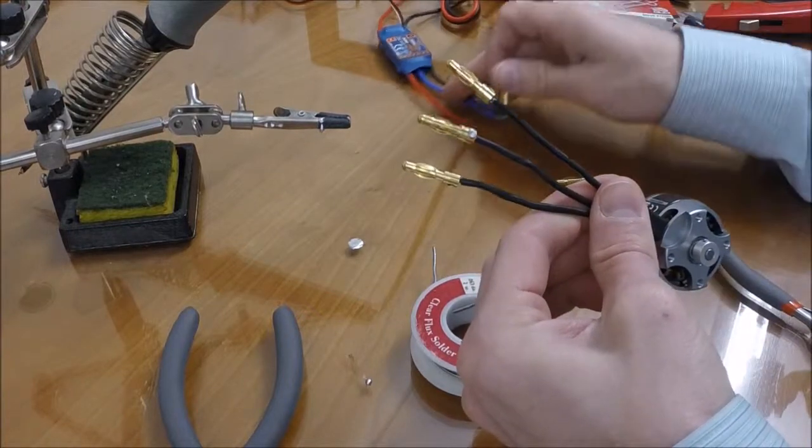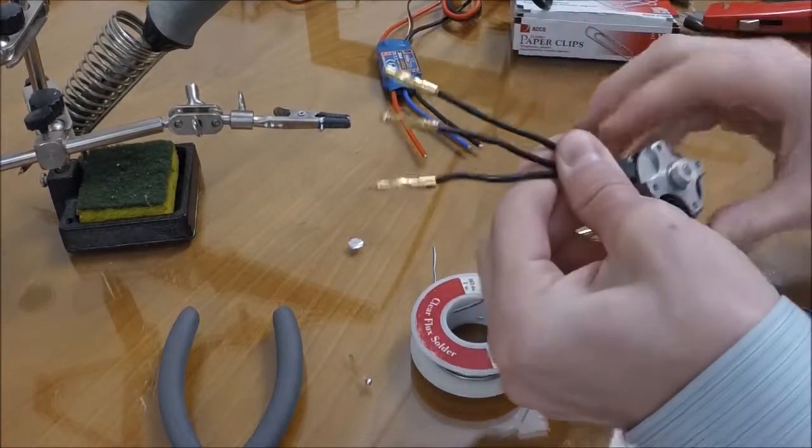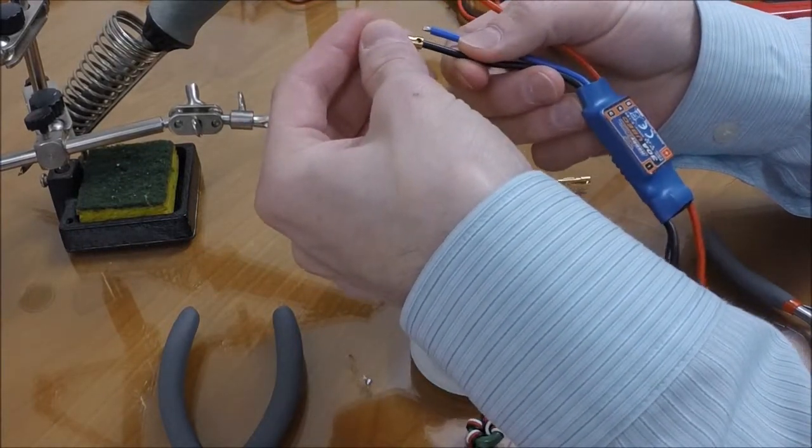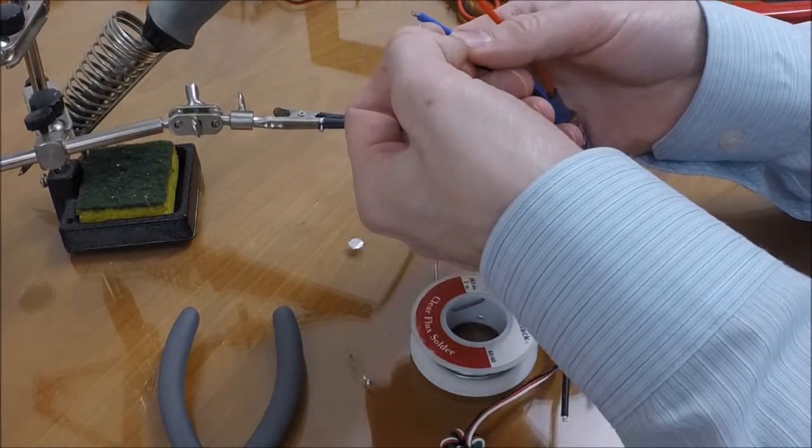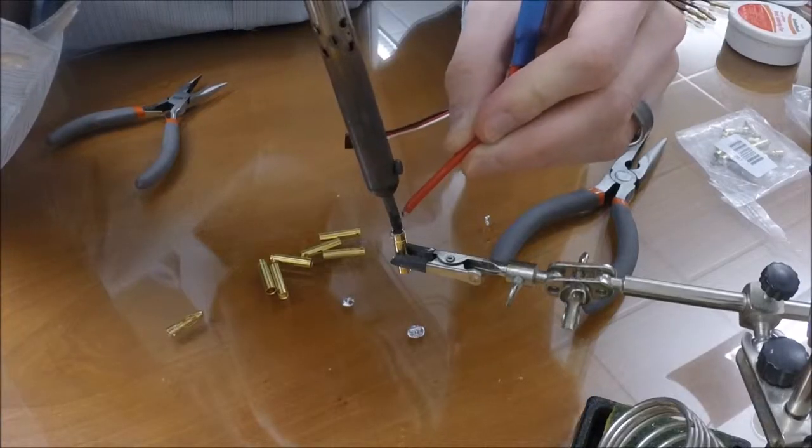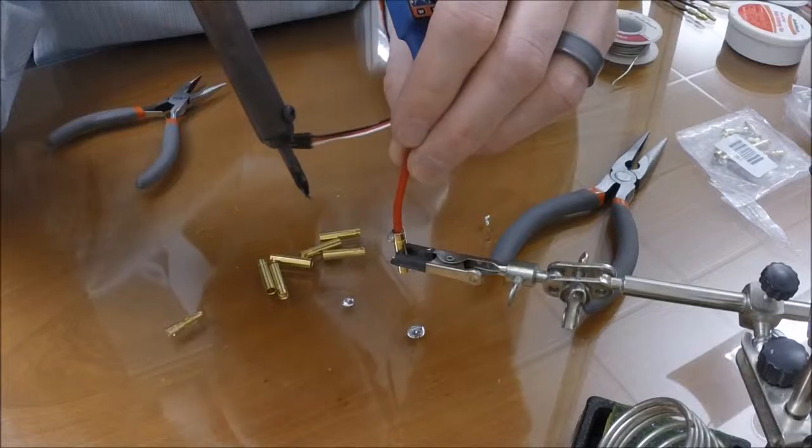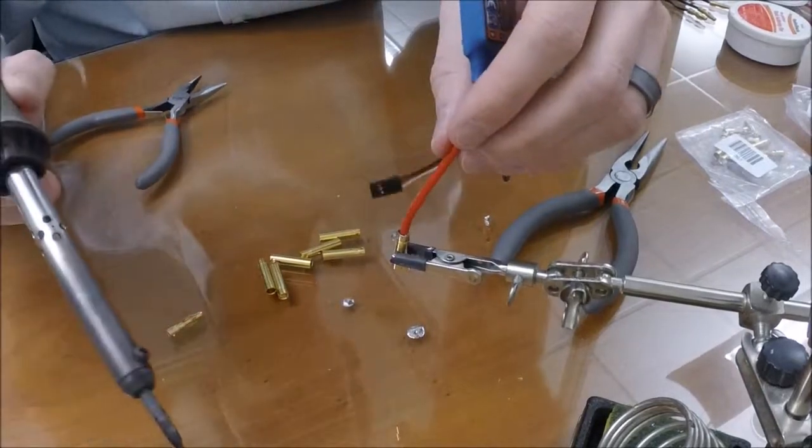So now that I've got the connectors on my motor, I'm going to put the female sides onto my speed controller. The wires are already stripped for me but I'll do this the same way by dropping just a little dab of solder in the cup. Now I'm reheating the solder that's in my cup and getting ready to quickly stick my wire in. Hold it for just a few seconds while it sets.